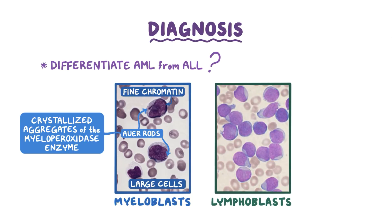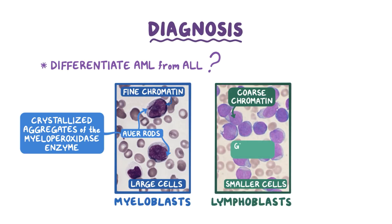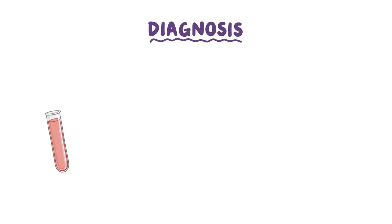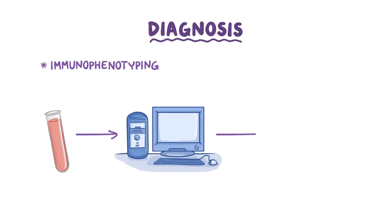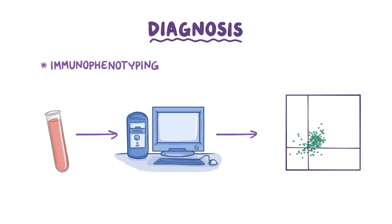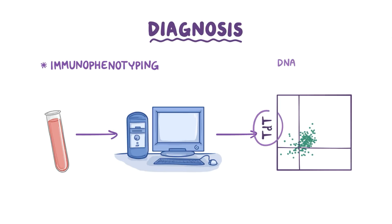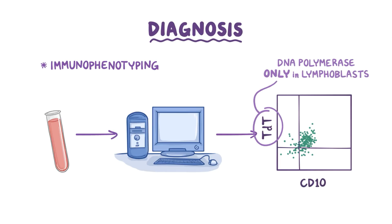On the other hand, lymphoblasts are relatively smaller cells with coarse chromatin, which are clumped together and have small nucleoli. Lymphoblasts have very little cytoplasm, which has glycogen granules. In addition, immunophenotyping is done to detect certain markers. For example, TdT, which is a DNA polymerase present only in the nucleus of the lymphoblast, is therefore a marker for them, and CD10 is a surface marker for pre-B cells.